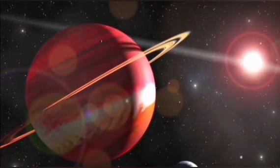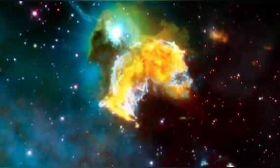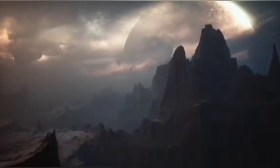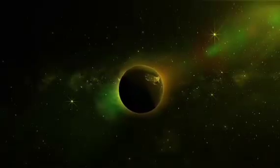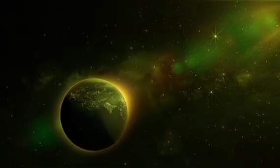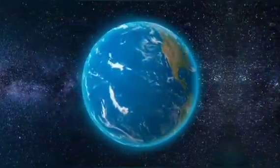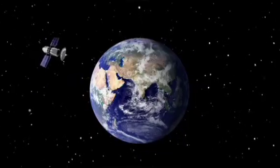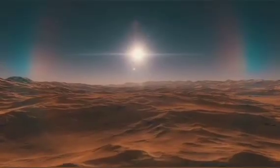When Betelgeuse ultimately detonates as a supernova, it will be among the most dramatic cosmic occurrences ever documented. Even at a distance of 640 light-years, the blast will be so radiant that it could outshine the full moon and even be seen during daylight for several weeks or even months. Experts estimate that the supernova will discharge more energy in mere seconds than our Sun will emit throughout its entire 10 billion-year lifespan. The illumination from the explosion will speed through space and eventually reach Earth as a brilliant pinpoint of light unlike anything we've witnessed before.